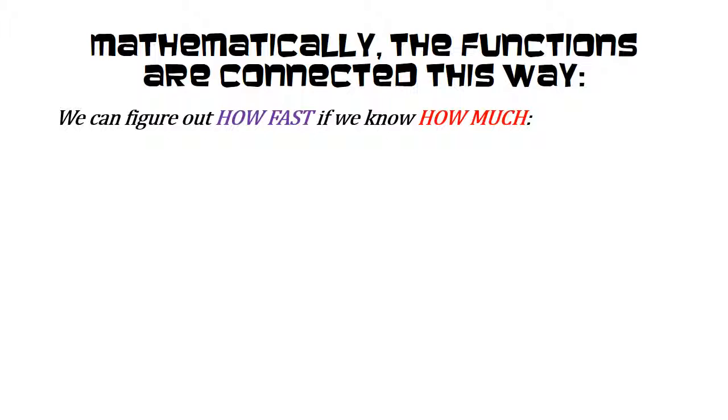Mathematically, the functions are connected this way. First of all, we can figure out how fast something is changing if we know how much it's changing. The rate of change of that quantity is just how much the output changes given a certain amount of change in the input.